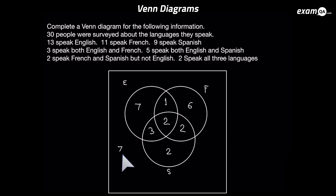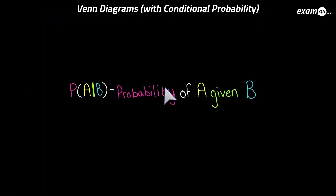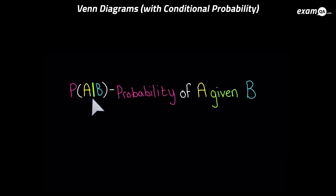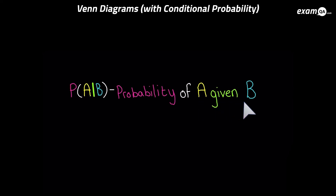So we've managed to fill in this Venn diagram, and it wasn't too bad. The trick is to try to start in the middle if you can. Now we've got P(A|B) — that straight line means 'given that'. So this is saying the probability of A given B, meaning B has definitely happened — work out the probability of A knowing that B has definitely happened.